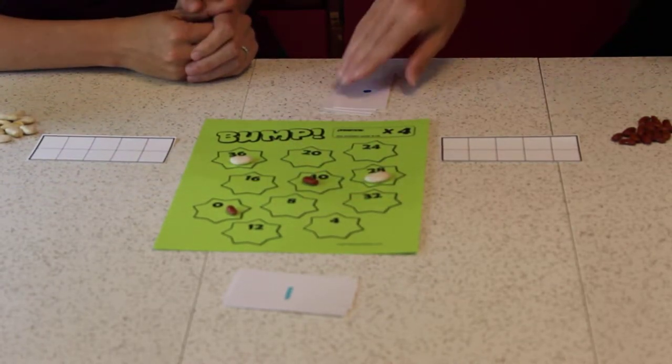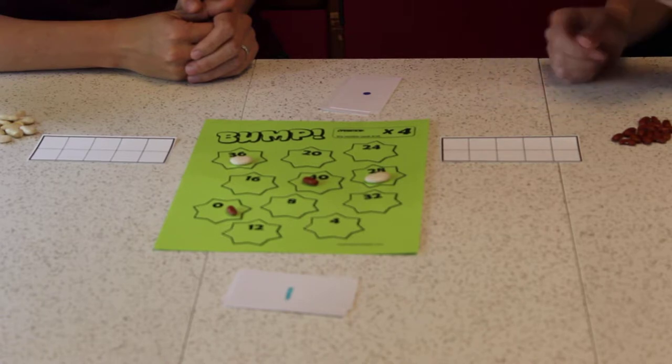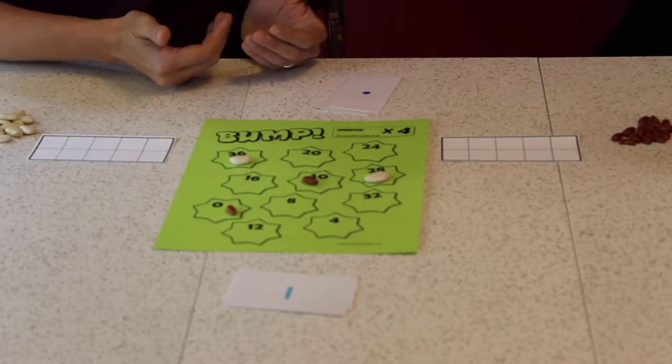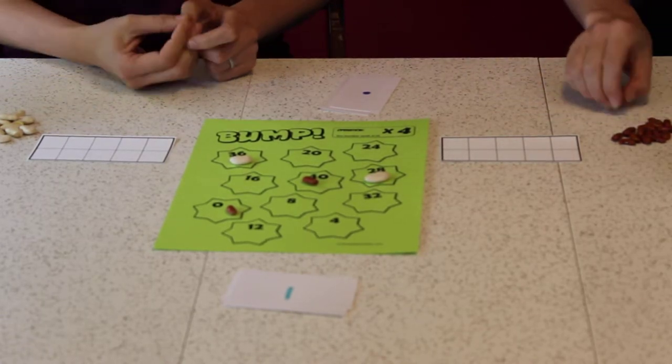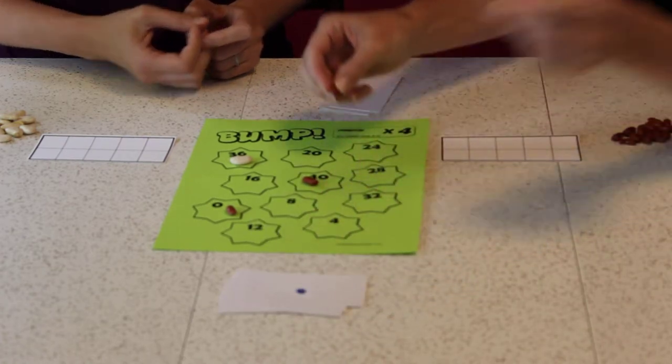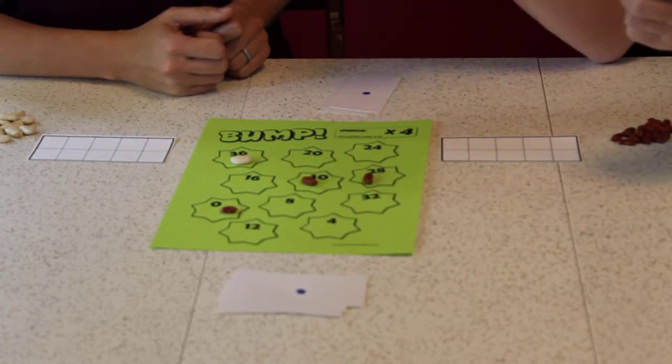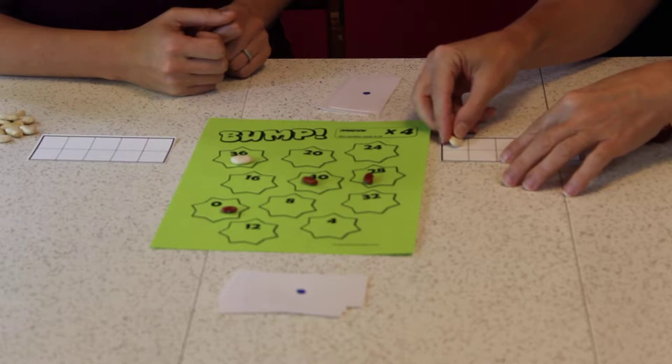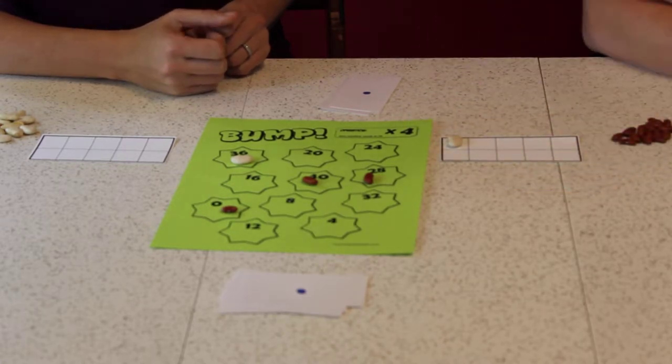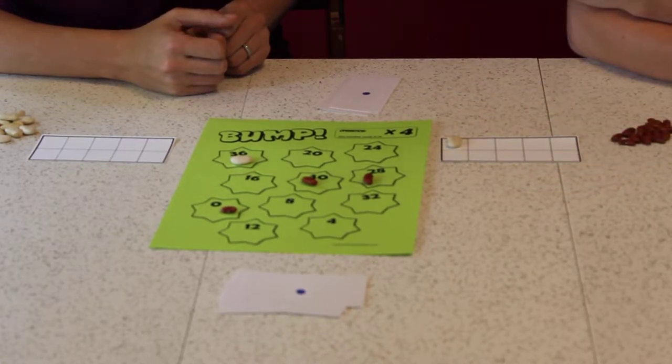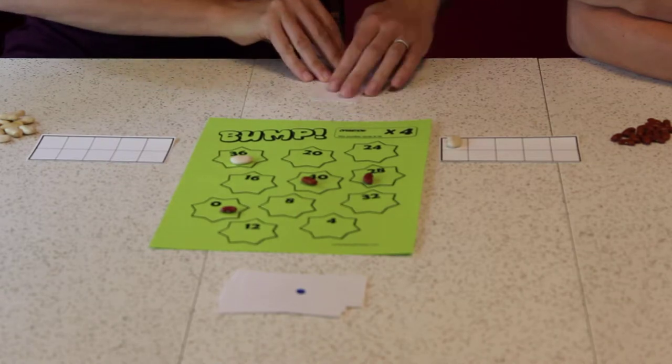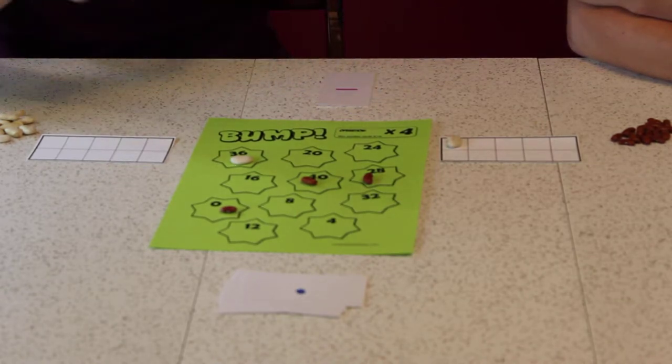My turn. Ooh, I got a seven. What? And the name of the game is Bump! So I am gonna bump you off, and I'm gonna take your lima bean and put it as the first bean in my ten frame, because I now have one point. You have nine more until you win the game.